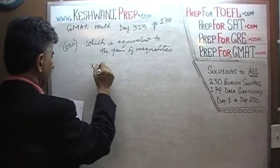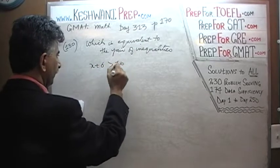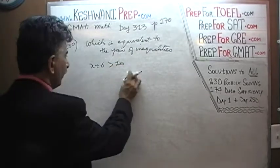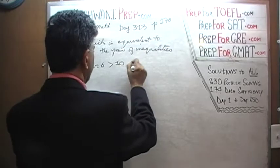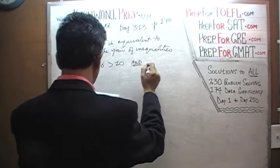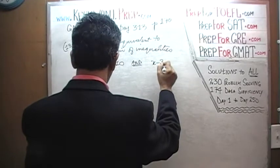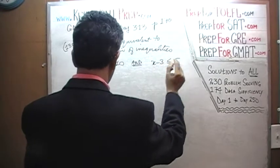The first one is this: We are told that x plus 6 is more than 10. This is too simple, too straightforward, more than 10. And the second one is x minus 3 is less than or equal to 5.